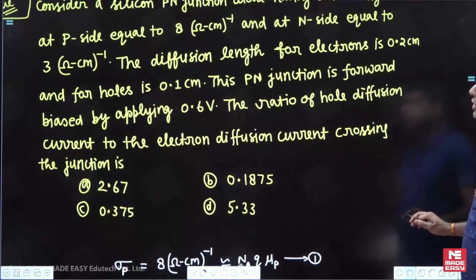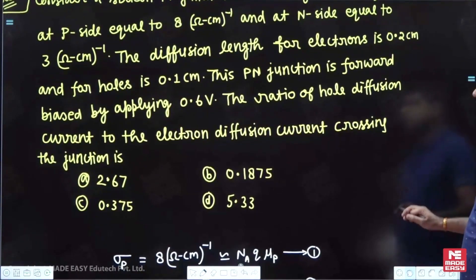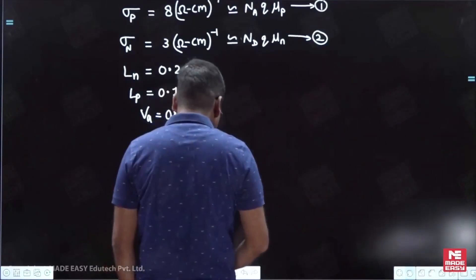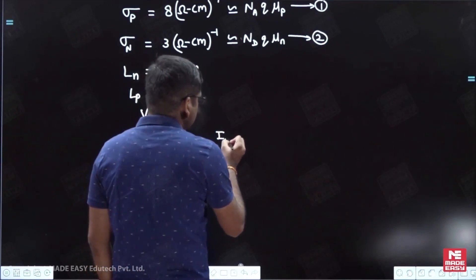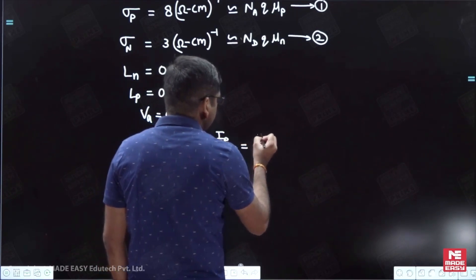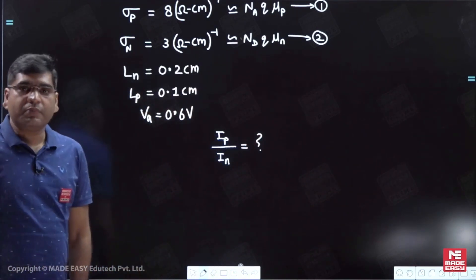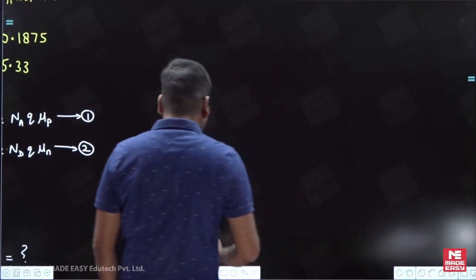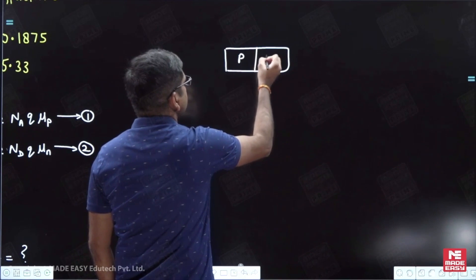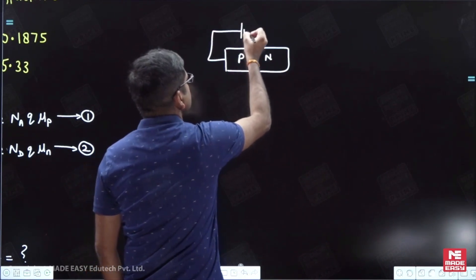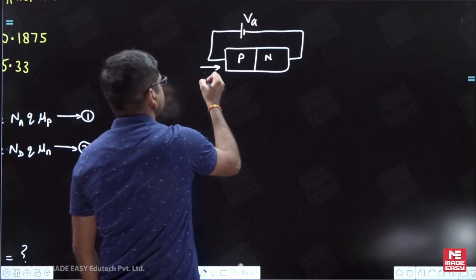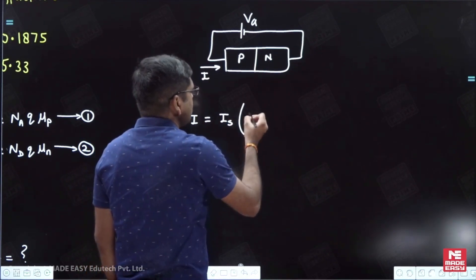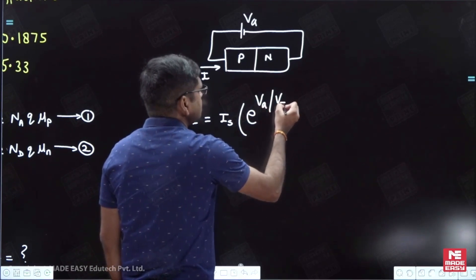We need to find the ratio of hole diffusion current (I_p) to electron diffusion current (I_n) crossing the junction. For a forward biased PN junction, the current-voltage relationship is: current I equals I_s times (e to the power Va/Vt minus 1), where we apply a voltage Va across the junction and current flows from P to N side.